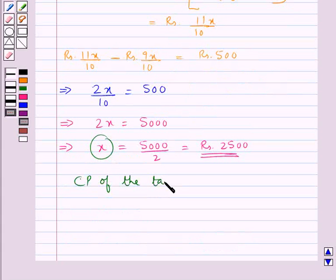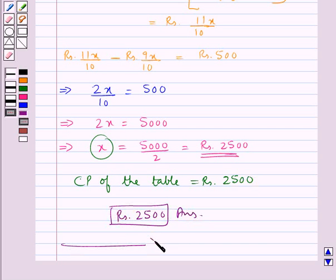So cost price of the table is equal to rupees 2500. Hence the final answer is rupees 2500. This completes the session. Hope you have understood the solution for this question.